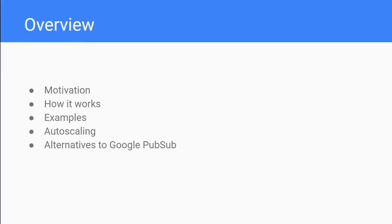We have a pipeline that uses Google PubSub to process these documents and create a search platform for people trying to search through that literature. That's why I'm talking about this today. Quick overview: I'm first going to motivate why Google PubSub is useful, then talk about how it works, go through some theory, show some examples, briefly talk about auto-scaling, and then talk about some of the alternatives available.